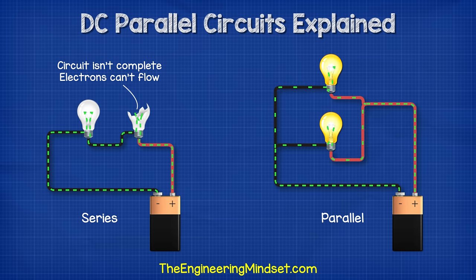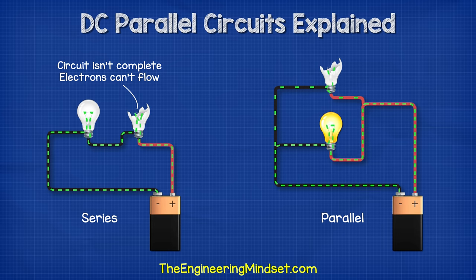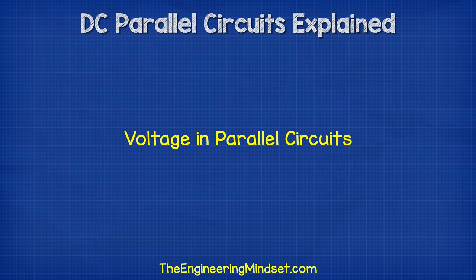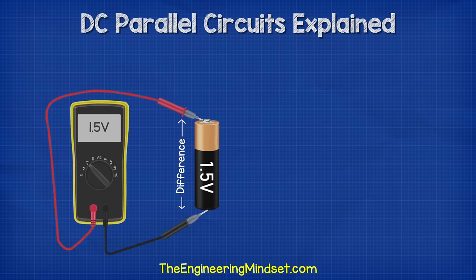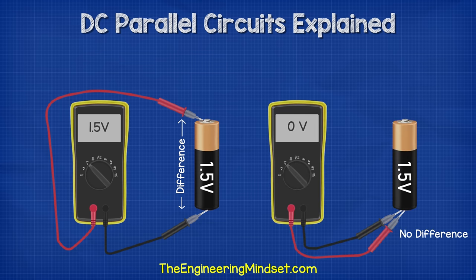A solution to this is to wire the lamps in parallel. When we do this, we provide the electrons multiple paths. If one lamp stops working, the circuit will continue to work, except for the one broken path. Let's look at voltage first in parallel circuits. Say we take a 1.5 volt battery. If we use a multimeter to measure across the two ends, we will read 1.5 volts. But if we measure the same end, we get a reading of zero — why?